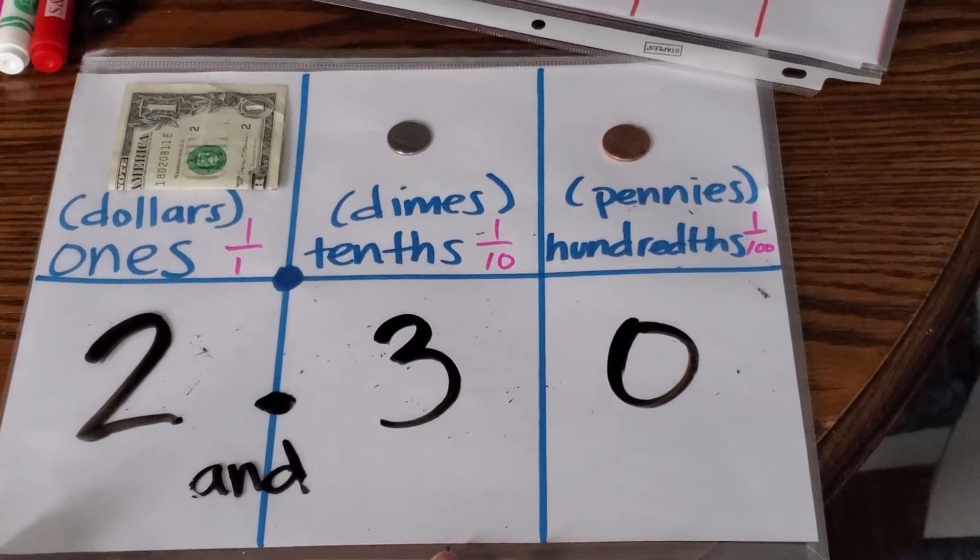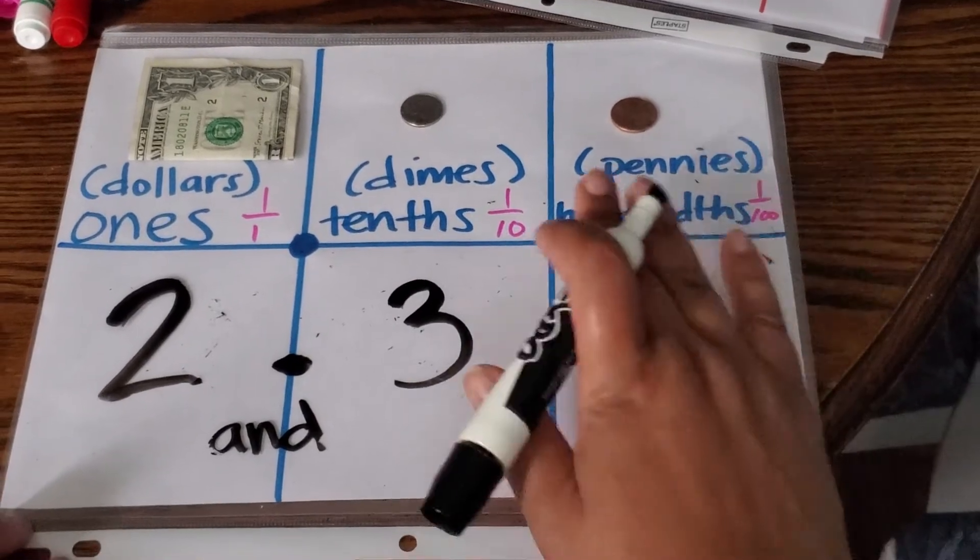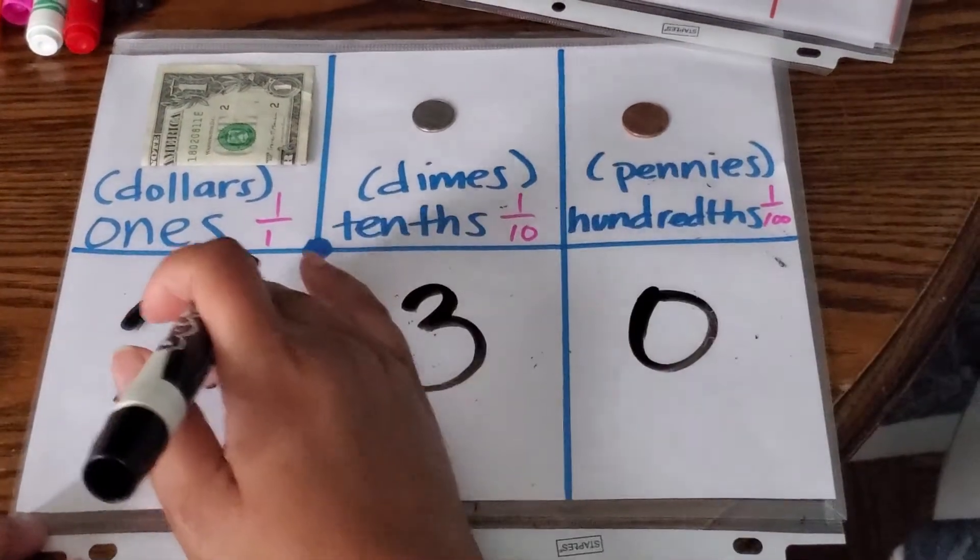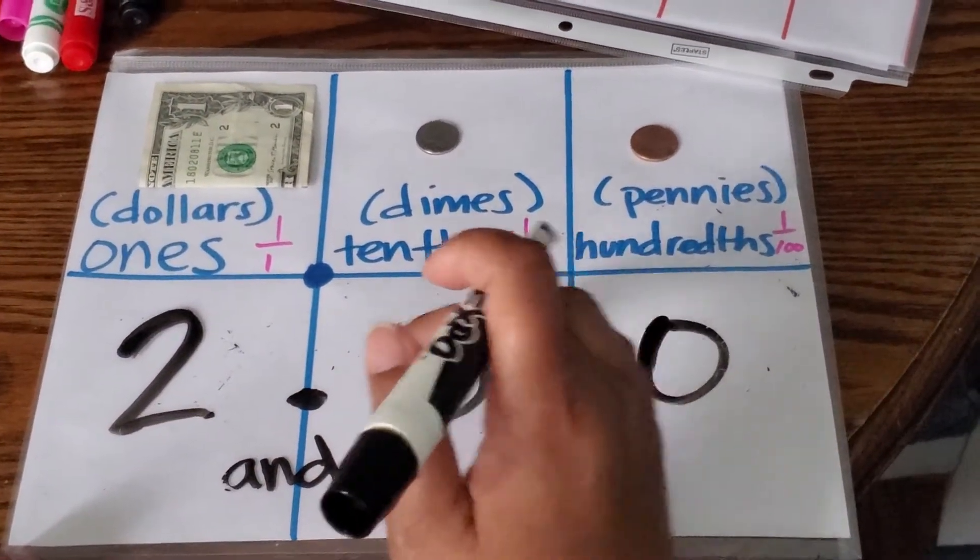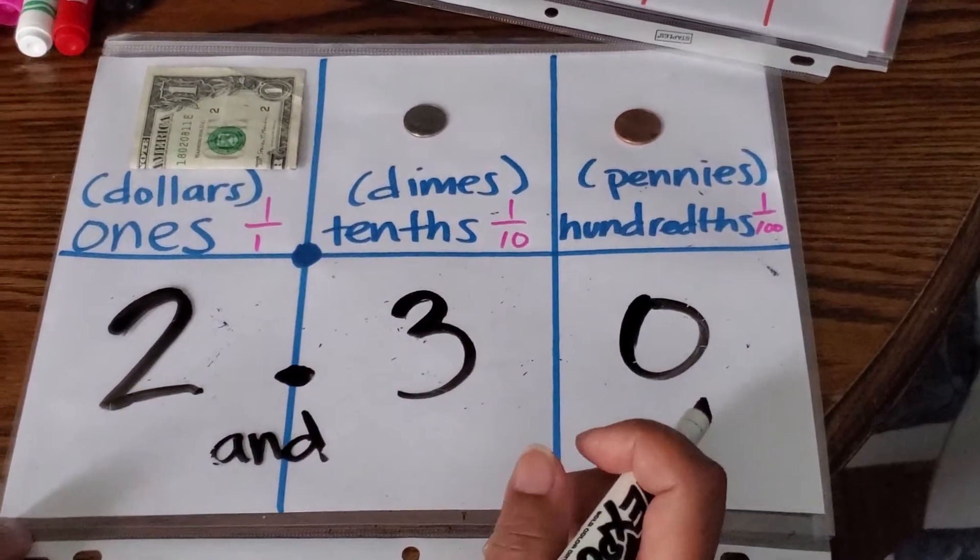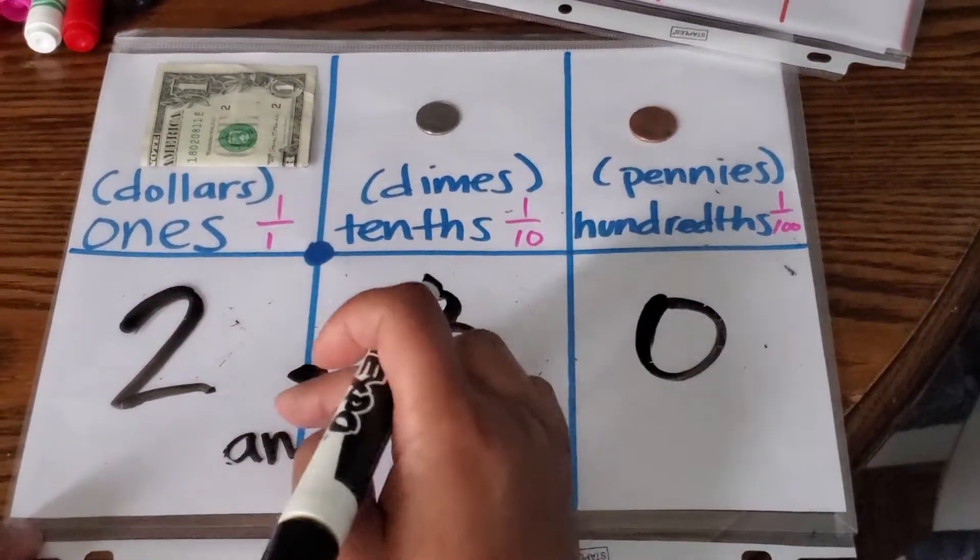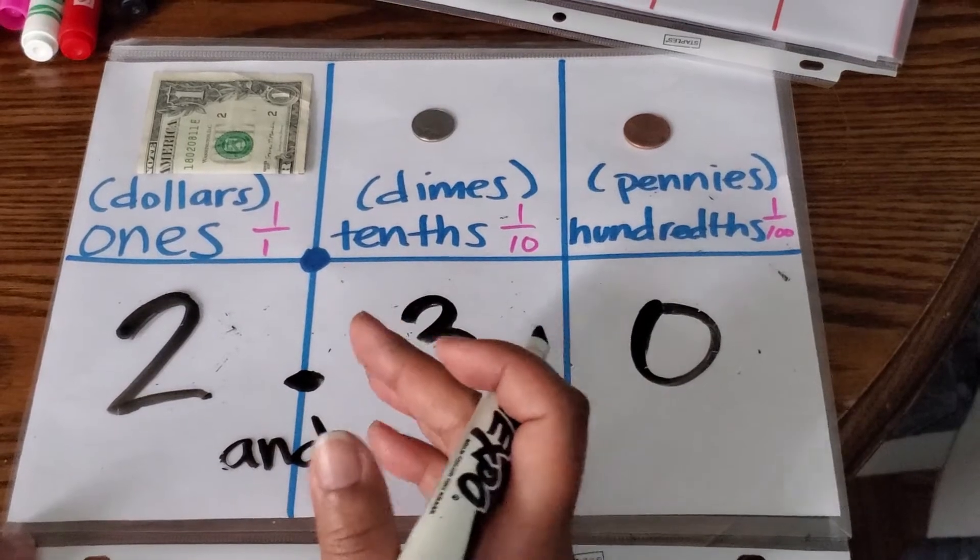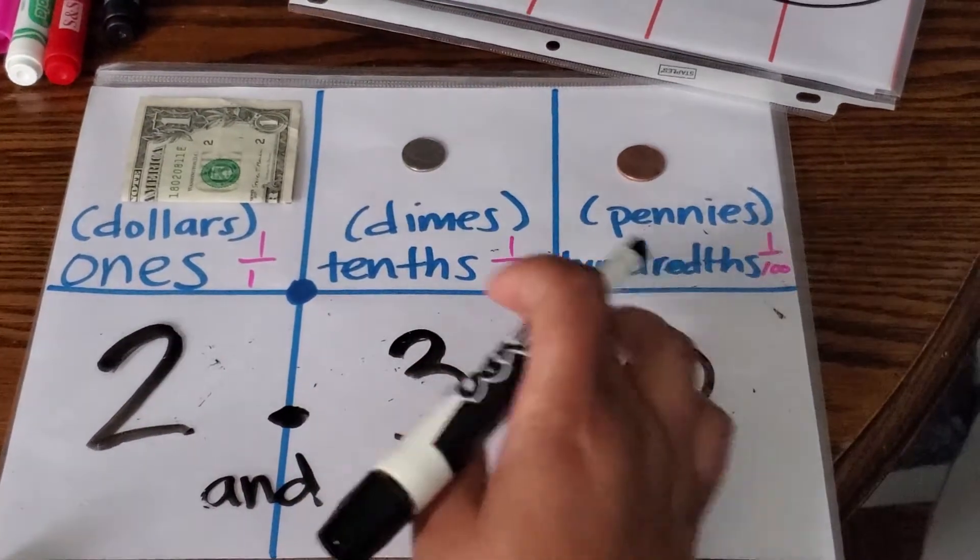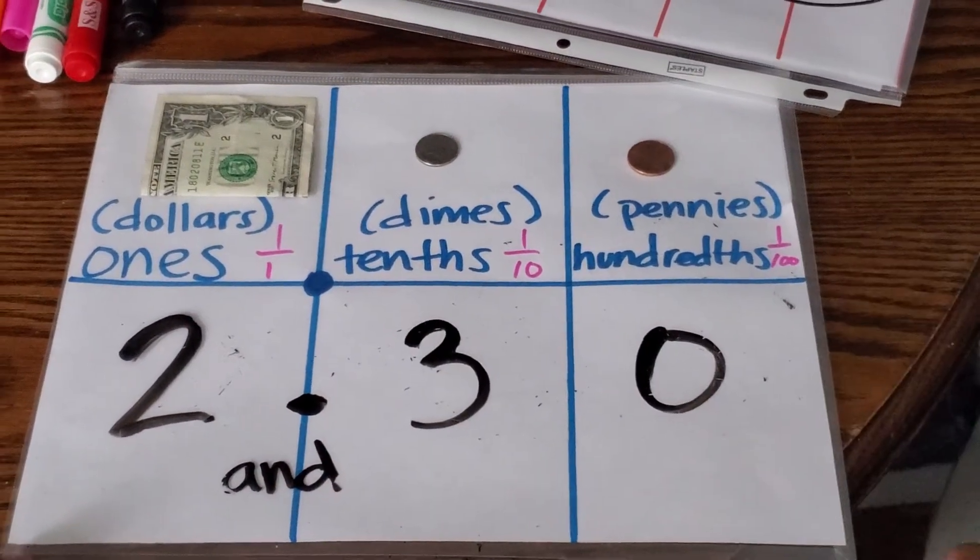Let's say you have something like this. This was a tricky one because you can say this two ways. You can ignore this zero and say two and three-tenths or you can say two and thirty hundredths. Both of those would be right.